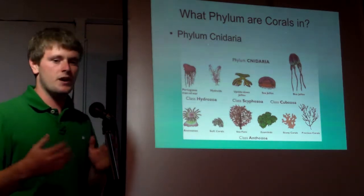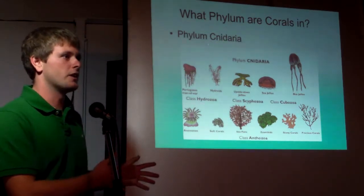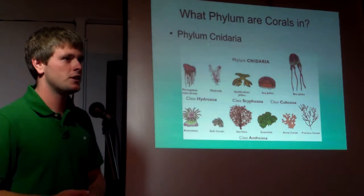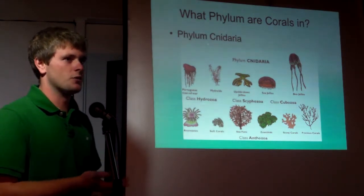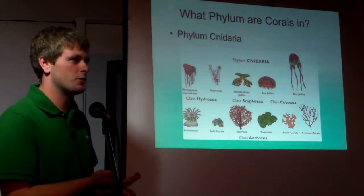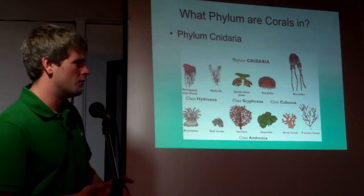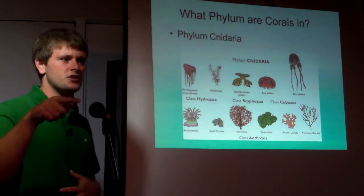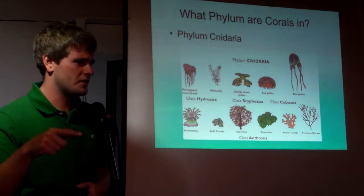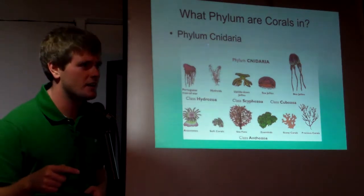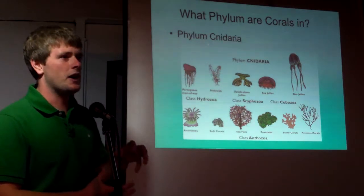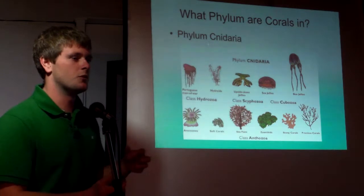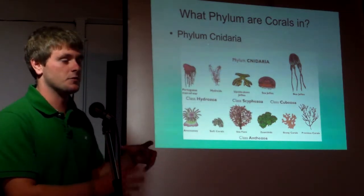Corals are in the animal kingdom. Their phylum would be the cnidarians, like corals and jellyfish. The annelids are segmented worms — earthworms, Christmas tree worms. Mollusks: snails or octopus. Echinoderms. On one of the sheets I gave you — the one about Kawako and tidepools — it has five different phyla you would find in tidepools in Hawaii, with some examples of species.